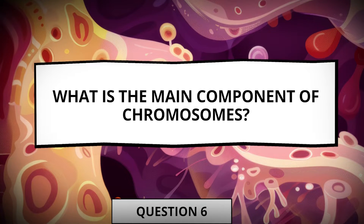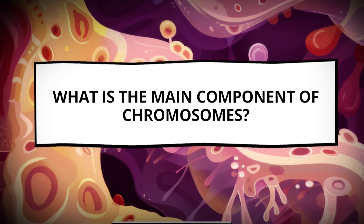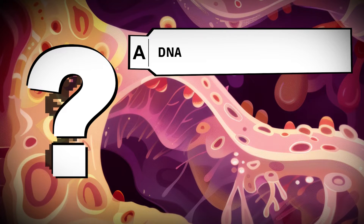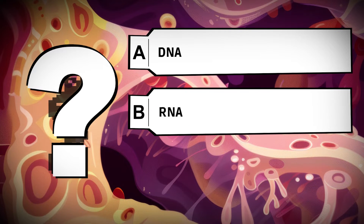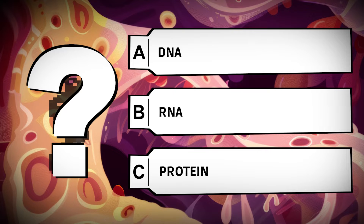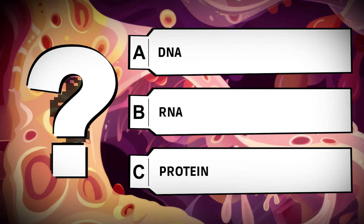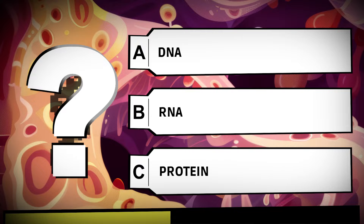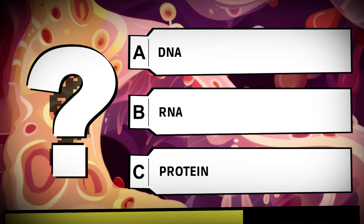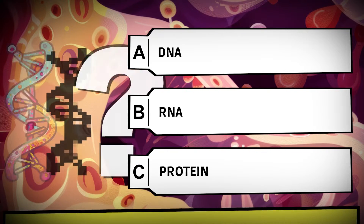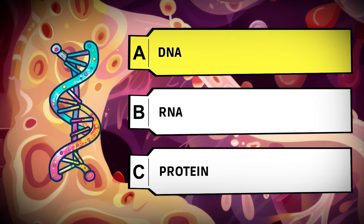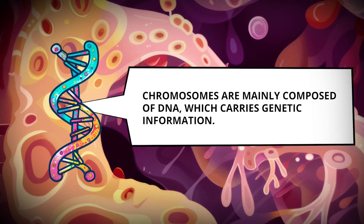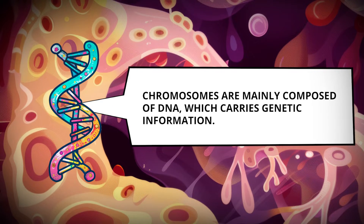What are chromosomes mainly composed of? Chromosomes, DNA, RNA, protein. Chromosomes are mainly composed of DNA, which carries genetic information.